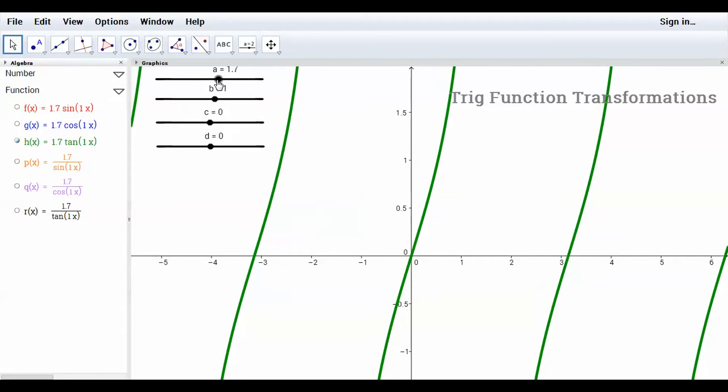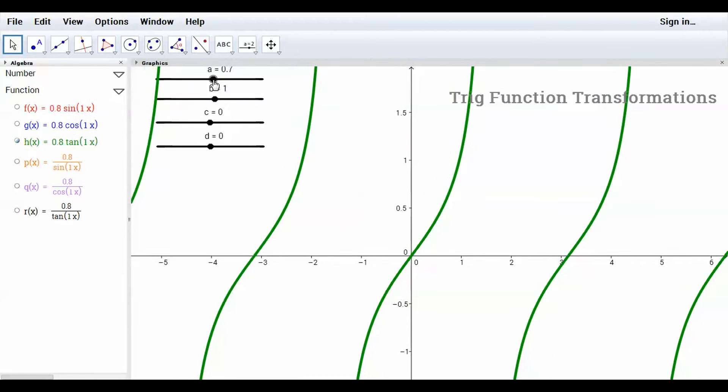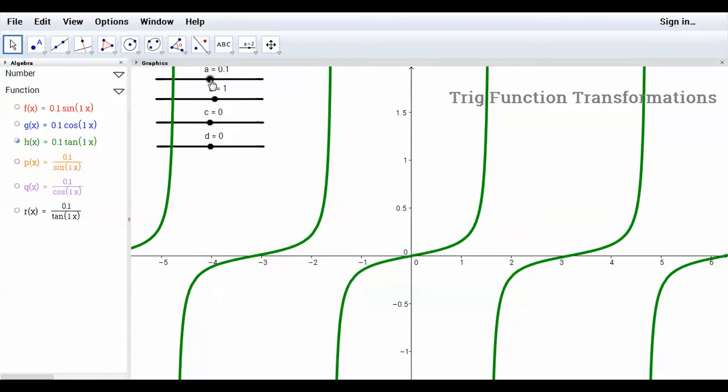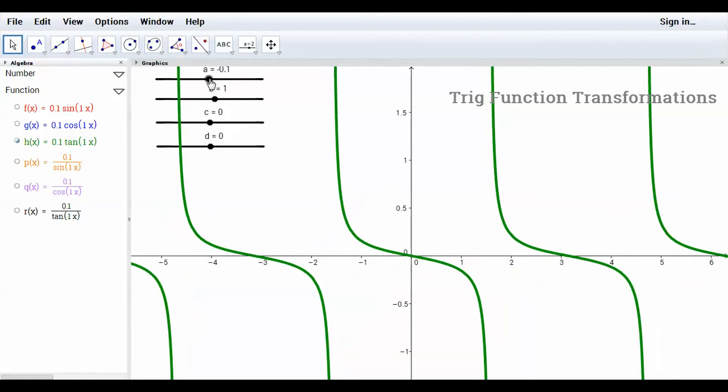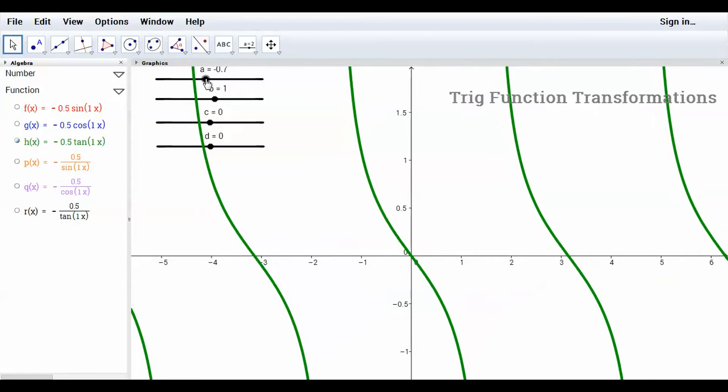And if I make my A value a fraction, a positive fraction between zero and one, you can see that the graph starts to squish down. If I make my A value negative, that's when we start to get our reflections.